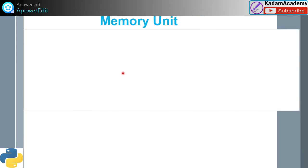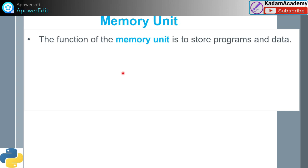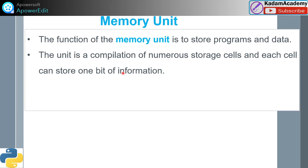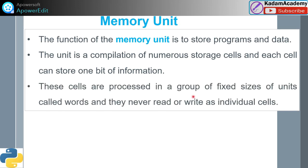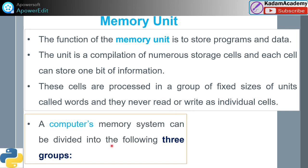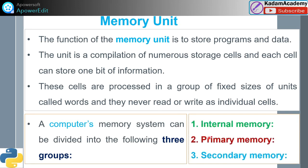The function of the memory unit is to store programs and data. The memory unit is a compilation of numerous storage cells, and each cell can store one bit of information. These cells are processed in groups called words and are never read or written as individual cells. The computer's memory system can be divided into three groups: internal memory, primary memory, and secondary memory.